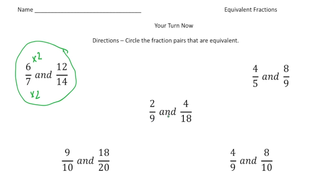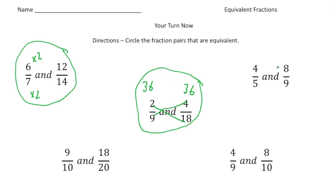The next one: two ninths and four eighteenths. I'm going to cross multiply: two times 18 is 36, and four times nine is 36. Because they have the same cross products, these two fractions are equal. The next one: four fifths and eight ninths. Four times nine is 36, and eight times five is 40. Because 36 does not equal 40, those two fractions are not the same.